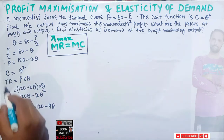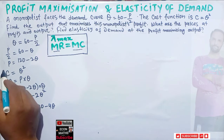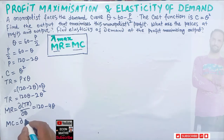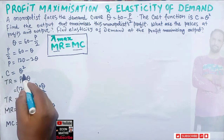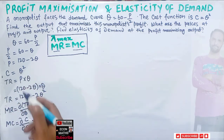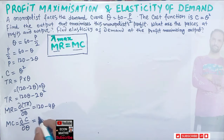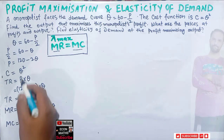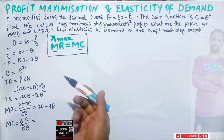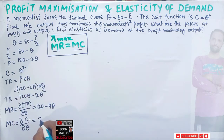Total cost is given as TC = q². Marginal cost is simply the derivative of the total cost function with respect to quantity. Taking the derivative of q²: the exponent 2 becomes the coefficient, and the exponent is reduced by 1, giving us marginal cost = 2q.